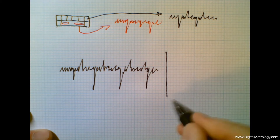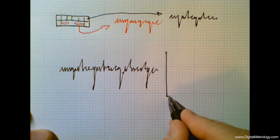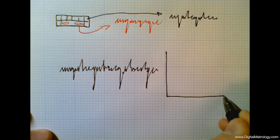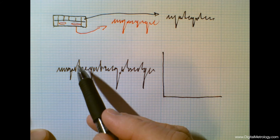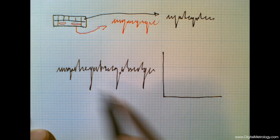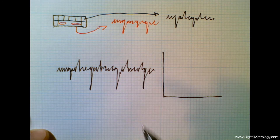Now we can't describe this kind of surface with a single number. There are three things that we care about: the peaks for the break-in, the core that carries the load, and the valleys that might carry lubrication.